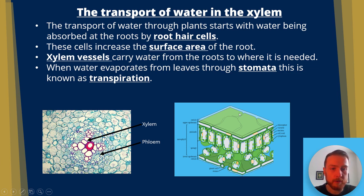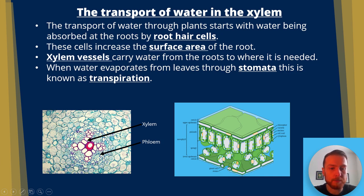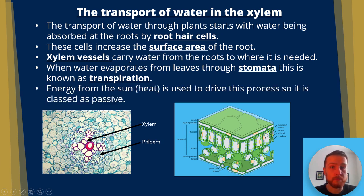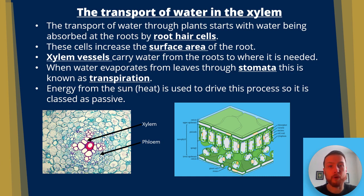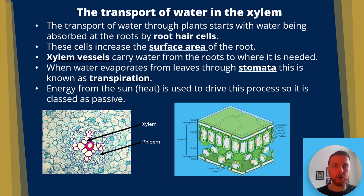In the diagram on the bottom right, we can see the stomata at the bottom — a small airspace on the underside of leaves — controlled by the guard cells. Energy from the sun, thermal energy, is used to drive this process. In terms of the plant, transpiration is actually passive because the energy is coming from the sun.